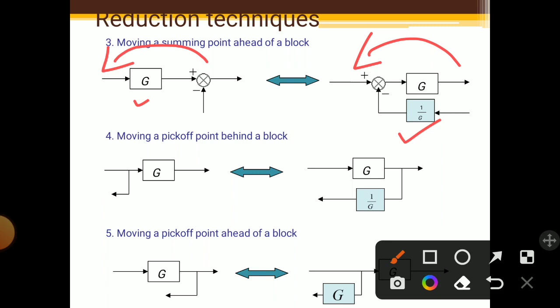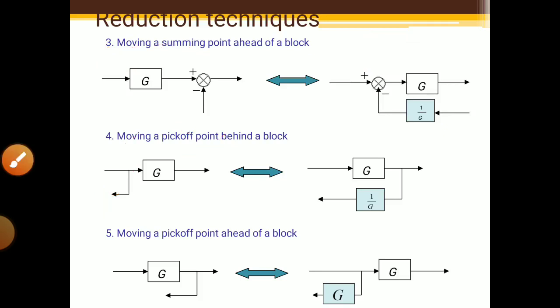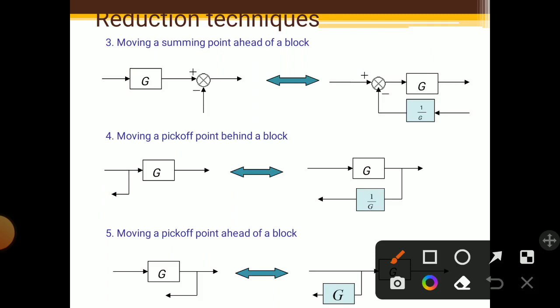The next rule is moving a pickup point behind a block. When you are moving a pickup point behind a block, you have to add one more block of the reciprocal of the block which you are moving. Suppose you are crossing block G — you have to add reciprocal of G, that is 1 upon G, in parallel.